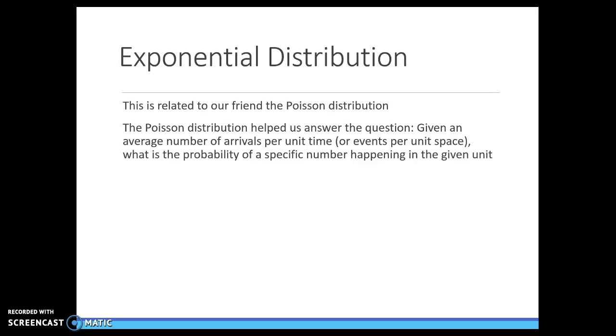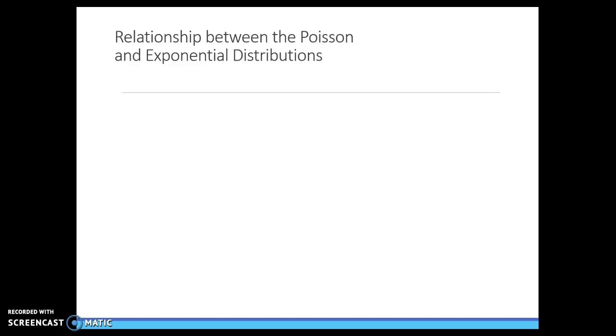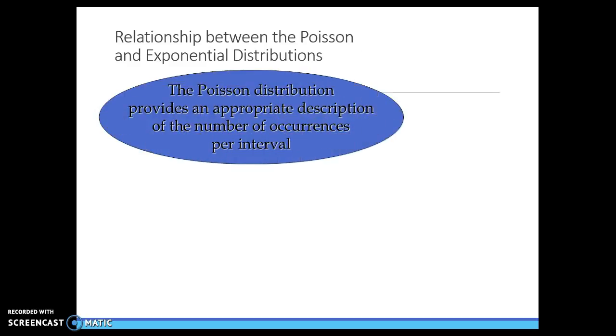So the Poisson distribution was asking what is the average number of arrivals per time. How many trains are going to come in the next hour? Given a specific number of that happening within a unit. Poisson says what is the number of occurrences to expect per interval. How many trains come in an hour?